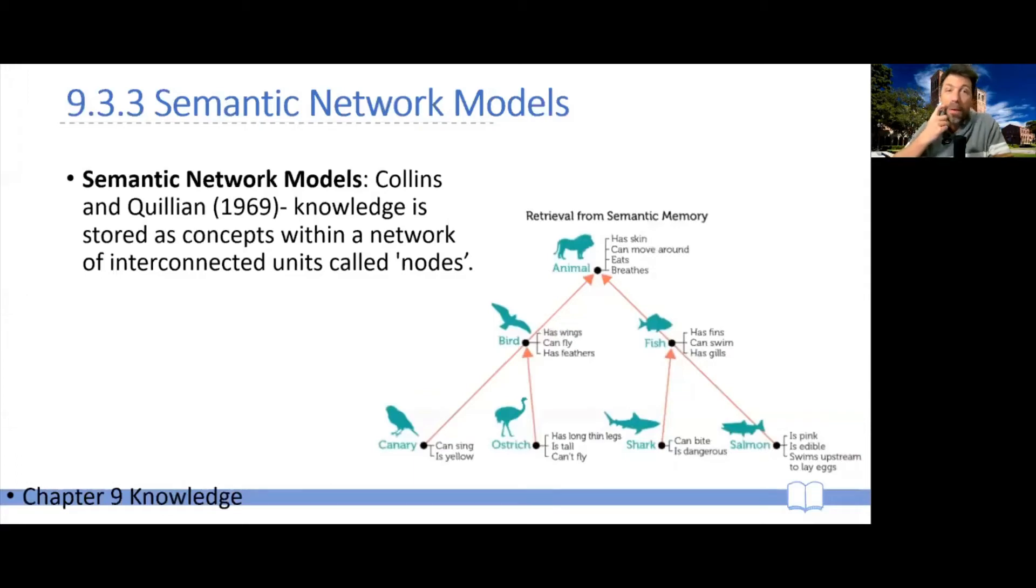Now, a different question is that of how is knowledge organized inside the human mind. And I just want to highlight two possible models. One is referred to as Collins and Quillian's semantic network model.